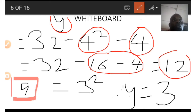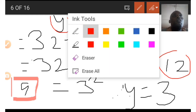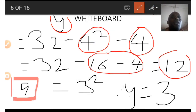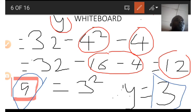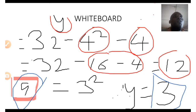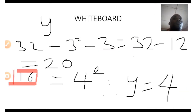The closest perfect square below 12 is 9, because after 9 the next perfect square is 16. So we find the square root of 9. The square root of 9 is 3, so 3 is the number we are looking for.